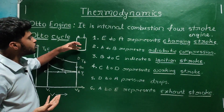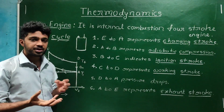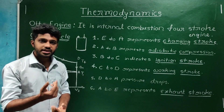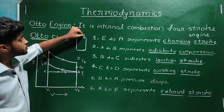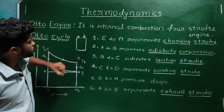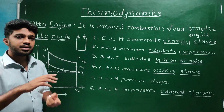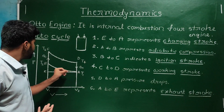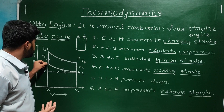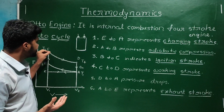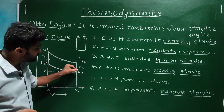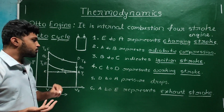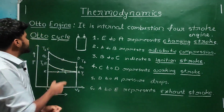To summarize, the steps of the Otto cycle are: charging stroke (intake valve open, air and petrol mixture enters), then A to B adiabatic compression, then B to C ignition stroke, then C to D working stroke, then exhaust valve opens, and finally the exhaust stroke. These are the steps of the Otto engine cycle.